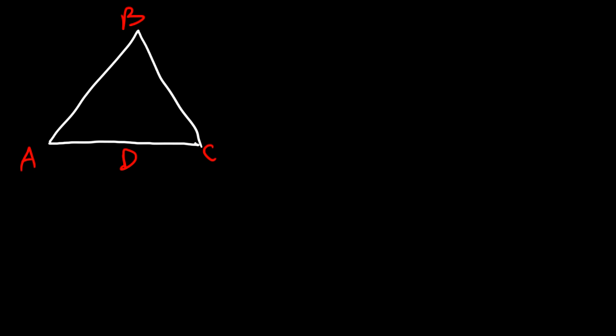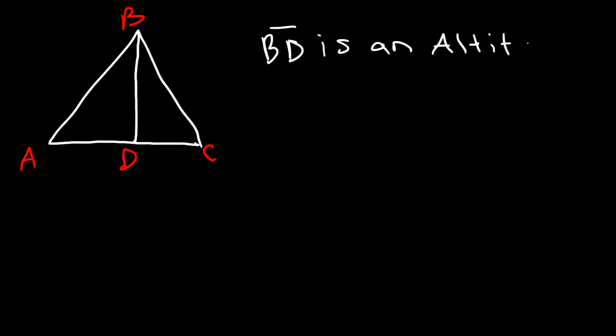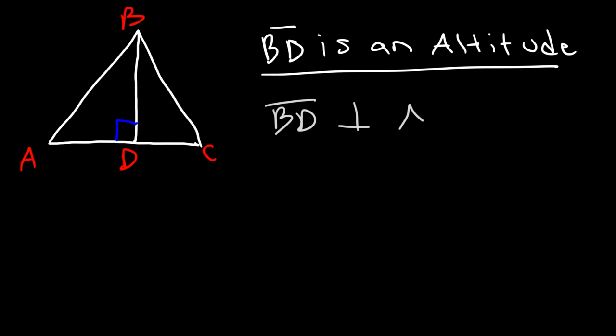Now, the next one you need to know is the altitude. We're going to use the same letters. This time, BD is going to be described as an altitude. So, what exactly is an altitude? An altitude, like a median, is a line segment. But it differs from a median — it doesn't split the segment into two congruent parts. An altitude simply forms right angles. So an altitude is basically a line that's perpendicular to the other side — BD is a line segment that's perpendicular to segment AC.